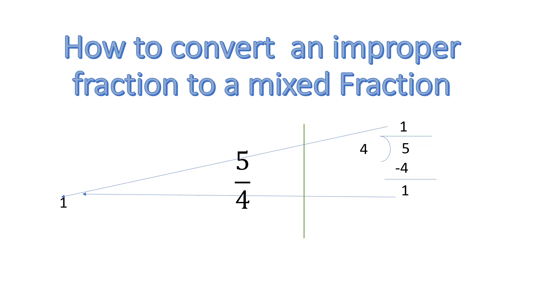The remainder 1 will go as the numerator and 4, the divisor will go as the denominator and this is your mixed fraction. So quotient is the whole number, remainder is the numerator of the mixed fraction and your divisor is the denominator of the mixed fraction.